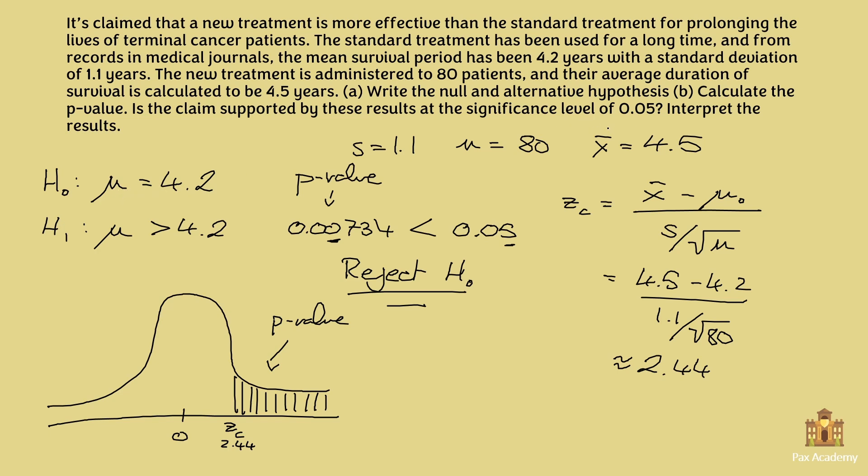Therefore, what this means, if we put it into words and we interpret the results, it means that the new treatment is indeed more effective. It's indeed more effective. So it prolongs the lives of cancer patients to more than 4.2 years. And this is it for this exercise. Therefore, let me know down in the comments if you have any questions. I'll be more than happy to answer them.